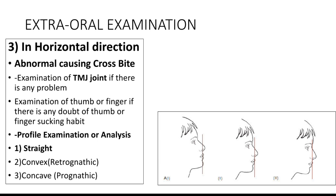In the horizontal direction we look for what is causing crossbite. We also do a TMJ examination if there is any problem. We examine for thumb or finger sucking habits if there is any doubt. In the external examination we also look at the profile: Class I is a straight profile, convex profile indicates a retrognathic mandible as in Class II, and a concave profile indicates a prognathic mandible as in Class III.